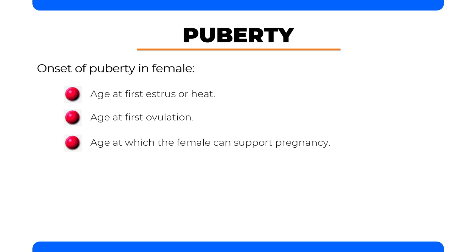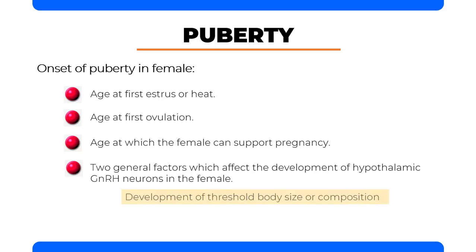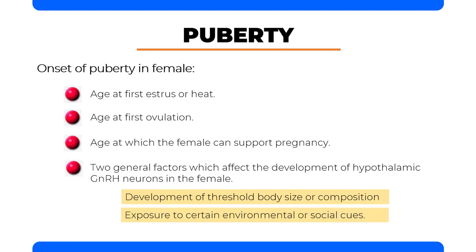You must remember at least two general factors which affect the development of hypothalamic GNRH neurons in the female: first, the development of threshold body size or composition, and second, the exposure to certain environmental or social cues.